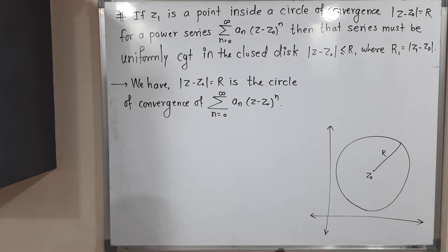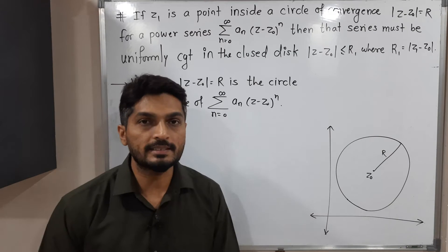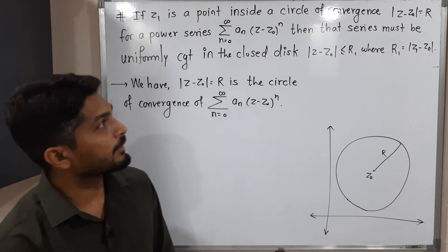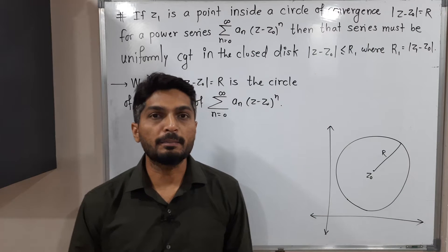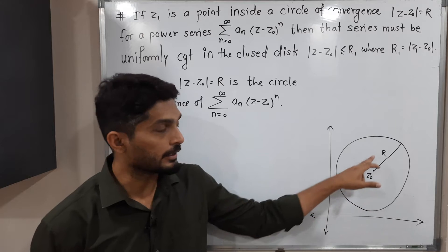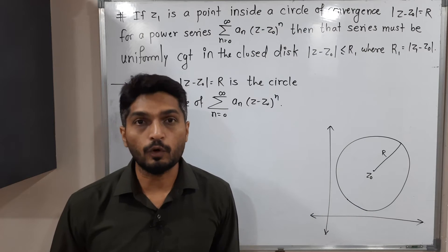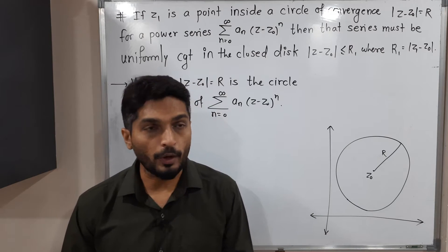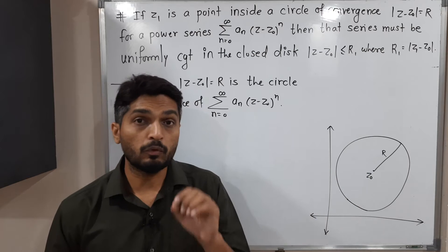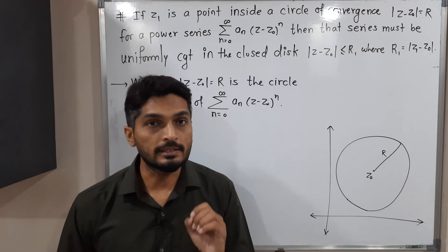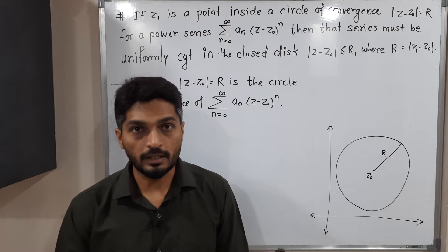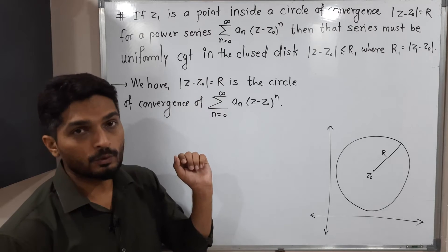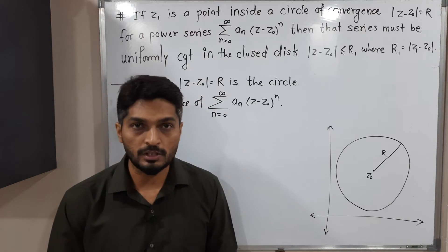In this video we are going to discuss the proof of this theorem. Let us discuss the statement first, then we will discuss its proof. The given information is we have the circle |z - z₀| = r, center z₀, radius r. This is a circle of convergence of this power series. Circle of convergence means if you take any point from inside the circle, then for that point the power series is convergent — that means having a finite sum.